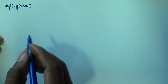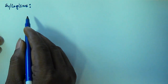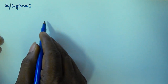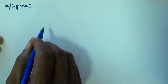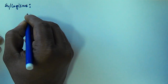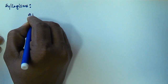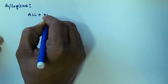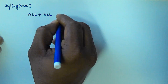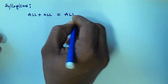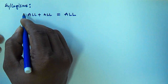Hello friends. In this video we will see some tricks to solve syllogism related problems. The first trick is R plus R is equal to R, so this is the first trick.